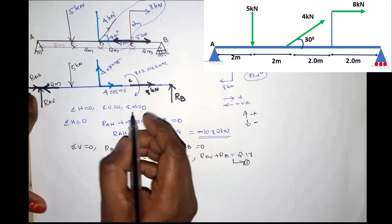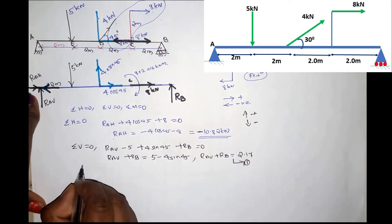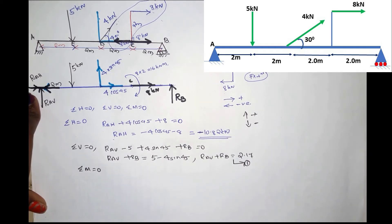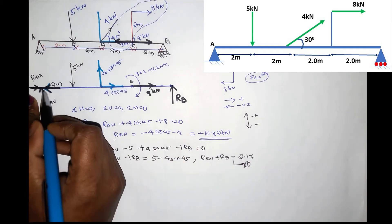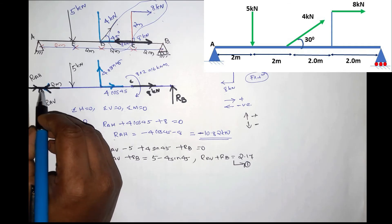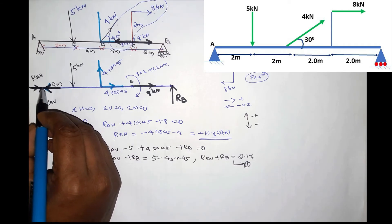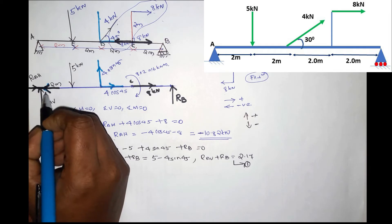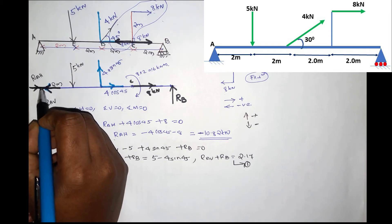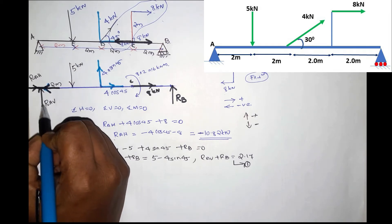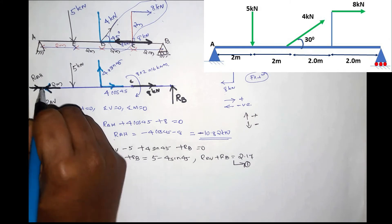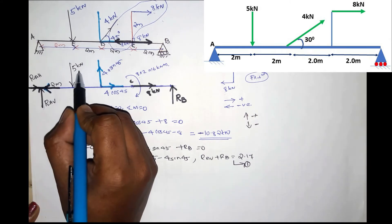This is our equation. For Sigma M equals zero, we take moments about a point. RH equals zero at that point because the line of action passes through it, so that term drops out.